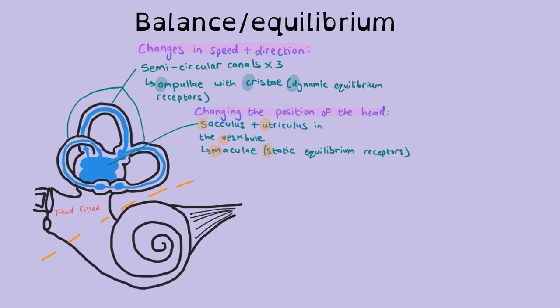So if you dodge forwards, at least the fluid in one of these semicircular canals will move and stimulate the receptors. If you dodge sideways, the fluid in another one would move and stimulate the receptors, the Christi. Whereas if you're just changing the position of your head, it's the maculae that are stimulated by the movement of the fluid.